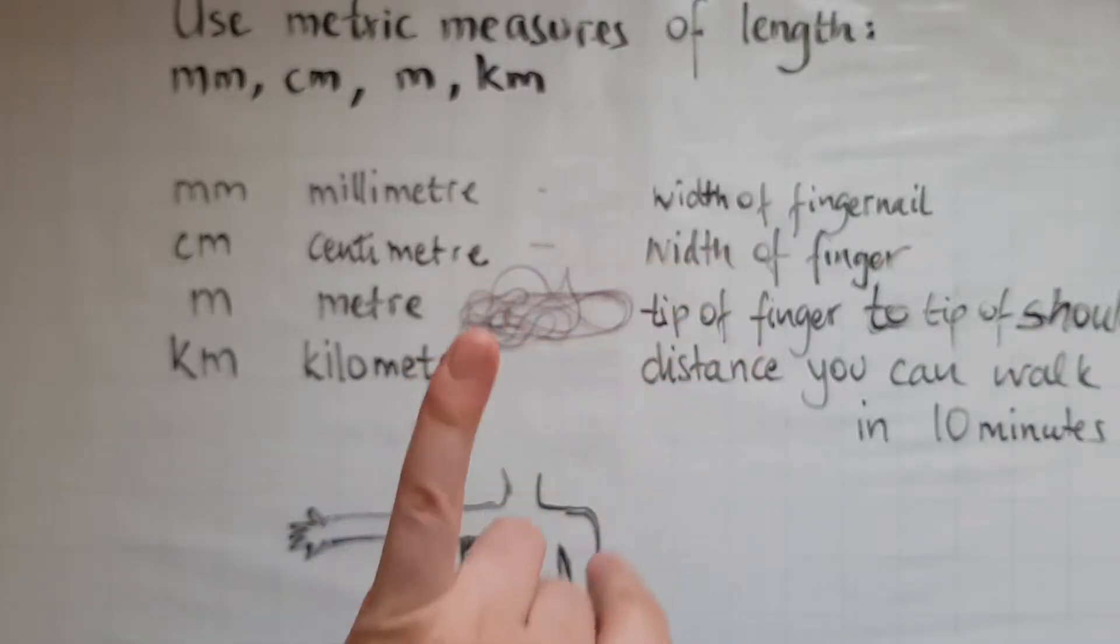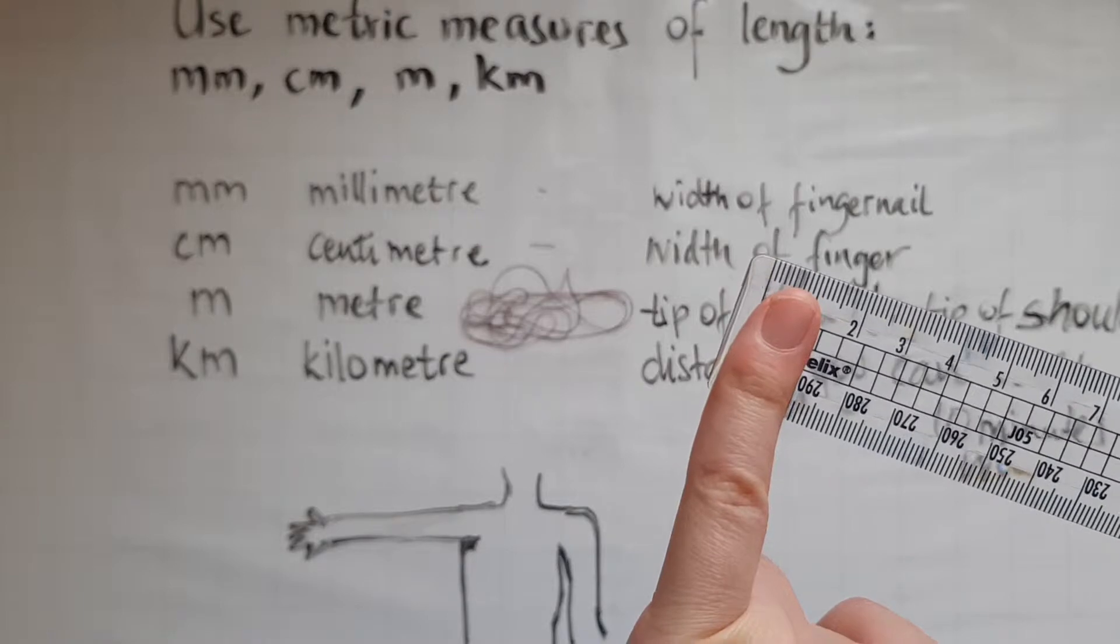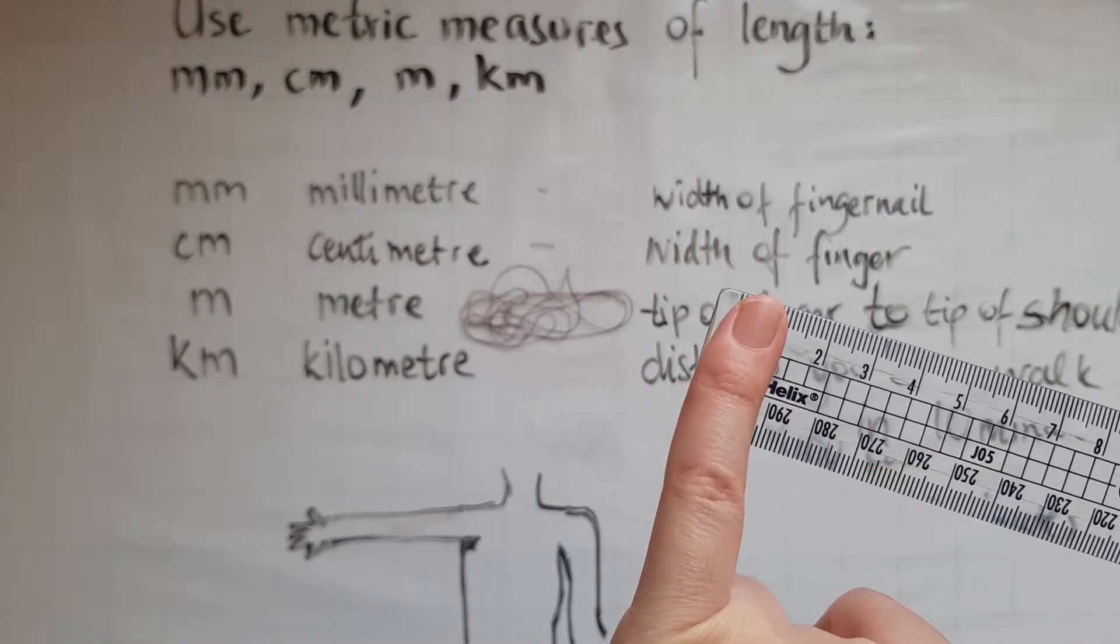That's about the width of the finger, so if I try and place my small finger on the ruler I can see it's about one centimeter.